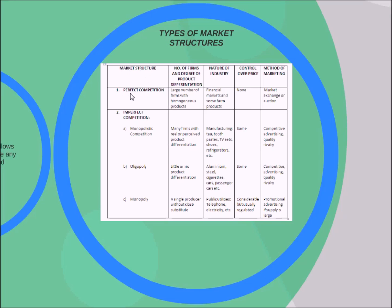We can see the characteristics of different types of market structure. The first column is about the market structure. The second column tells us about the number of firms and degree of product differentiation — whether a product is a perfect substitute for another. Next is the nature of industry, then control over price in different types of market structure, and then the method of marketing.